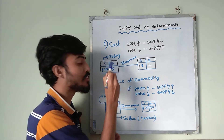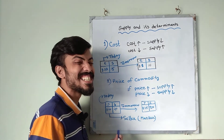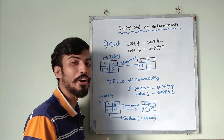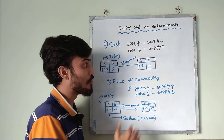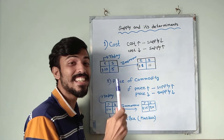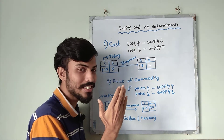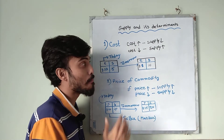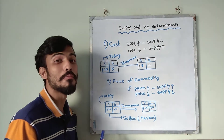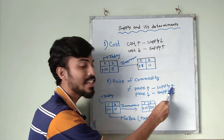But tomorrow you find that the cost of the marker decreased. You are going to increase your supply because the cost went down. So if cost increases, supply decreases; if cost decreases, supply increases. The second element is price of commodity — if price increases then supply will increase, and if price decreases then supply will decrease.